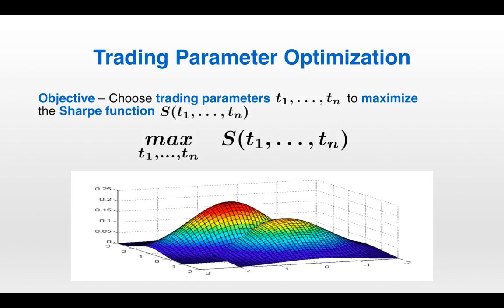That's enough about machine learning for now — let's get back to quant trading. As we've discussed previously, every trading strategy has parameters, and if you take the strategy's parameters and the strategy's trading rules, you can generate the return series for the strategy, and you can take the Sharpe ratio of that return series. So analogous to writing the loss function as a function of the hyperparameters in a machine learning model, you can write the Sharpe function as a function of the trading parameters of a trading strategy.